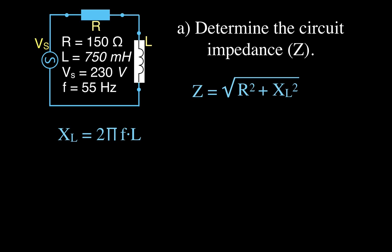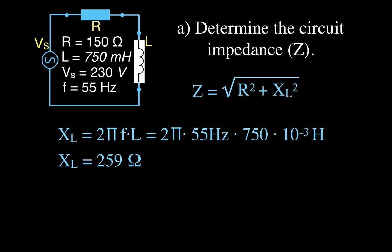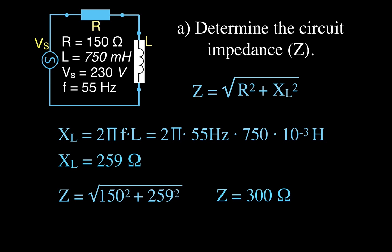That works out to two times pi times 55 times 750 times 10 to the minus 3 henries — milli is 10 to the minus 3. We calculate that and get that the inductive reactance XL is 259 ohms. Now knowing R and XL, we calculate the impedance as the square root of 150 squared plus 259 squared.